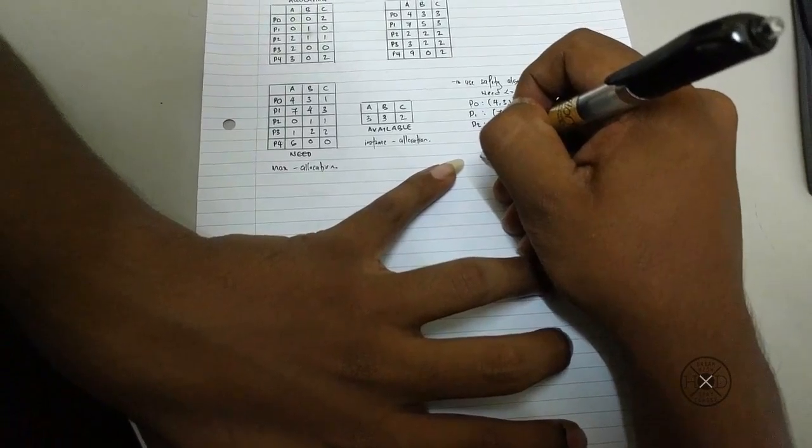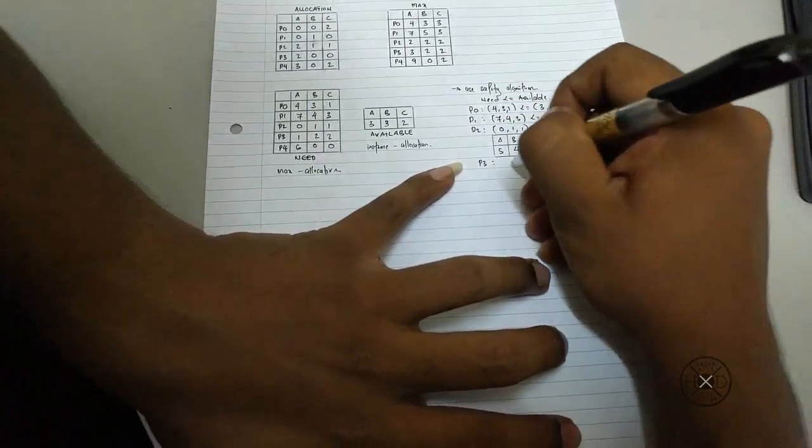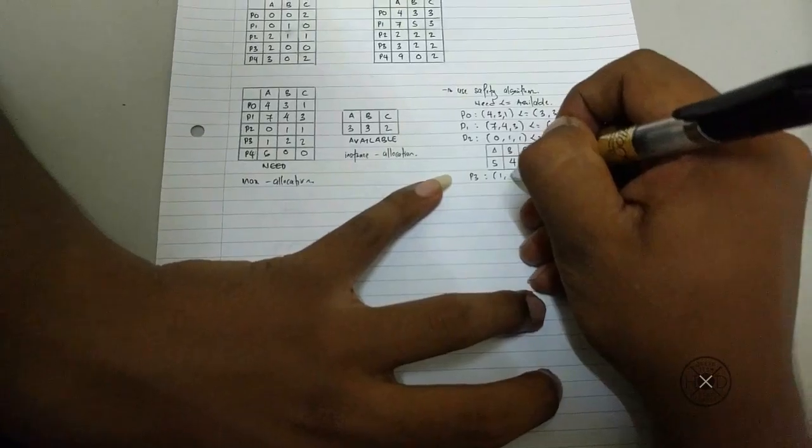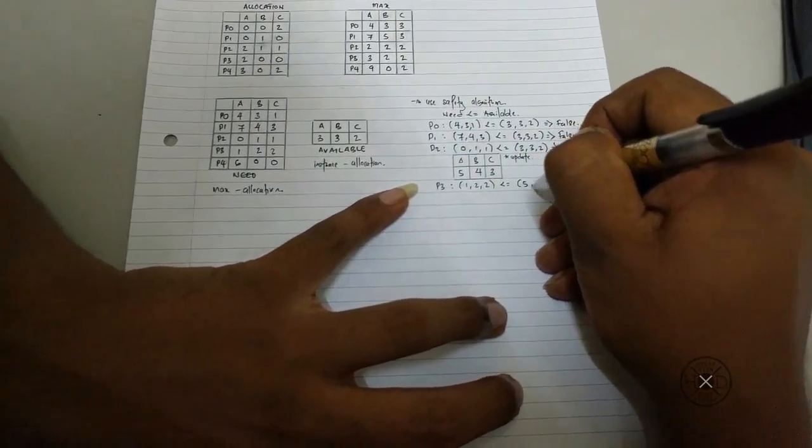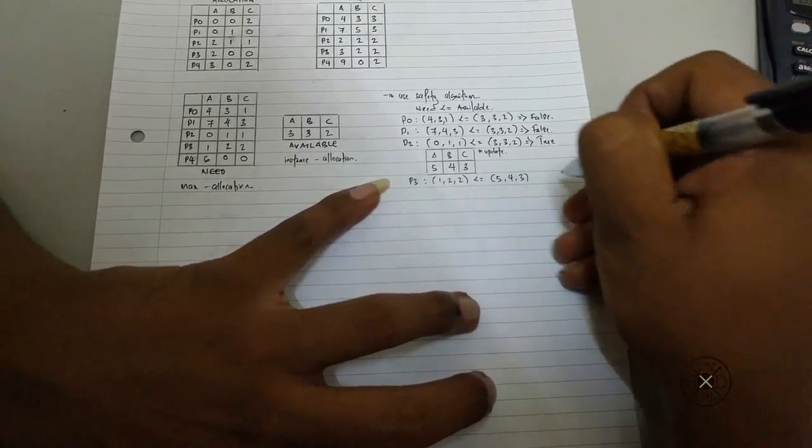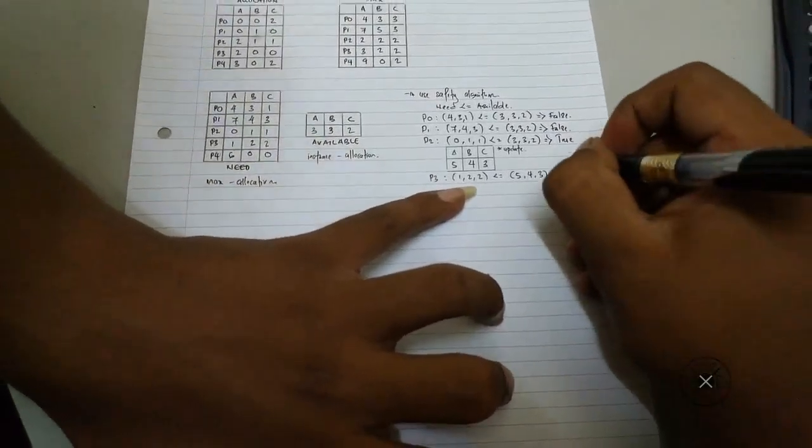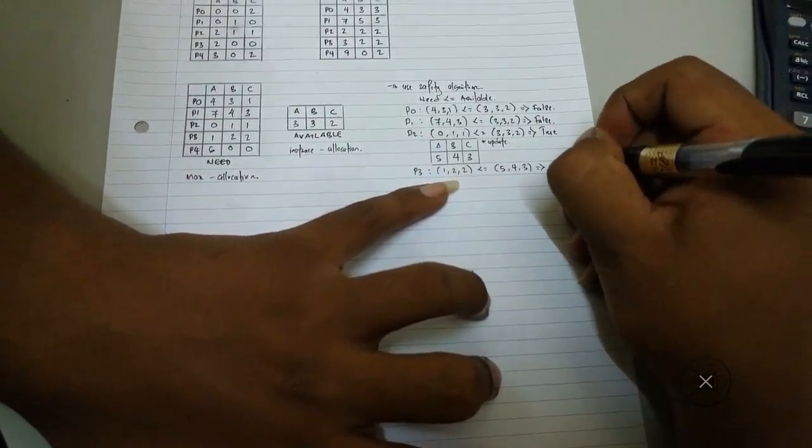Now I proceed to process 3. Process 3 is 1, 2, 2 less than equal 5, 4, 3. So now it's smaller than the available, so it's true.